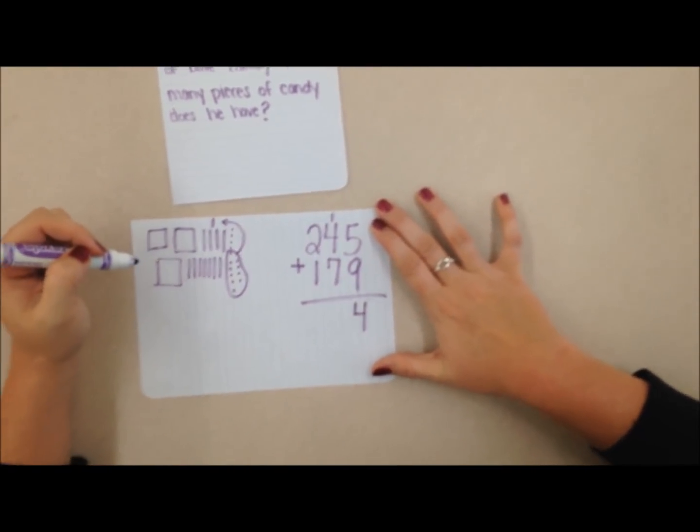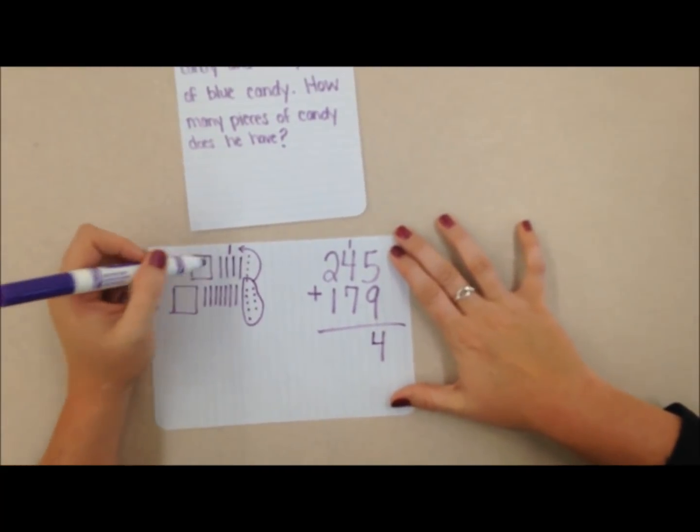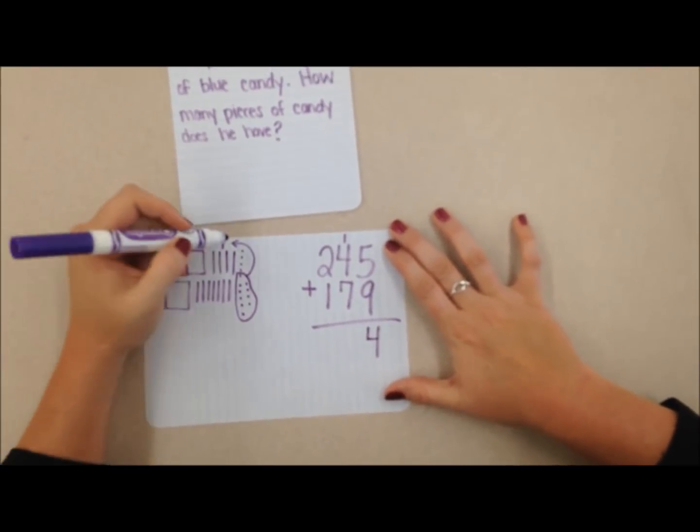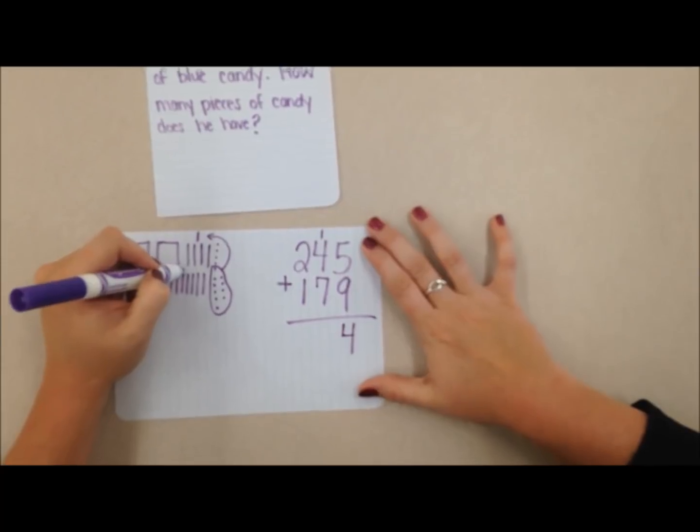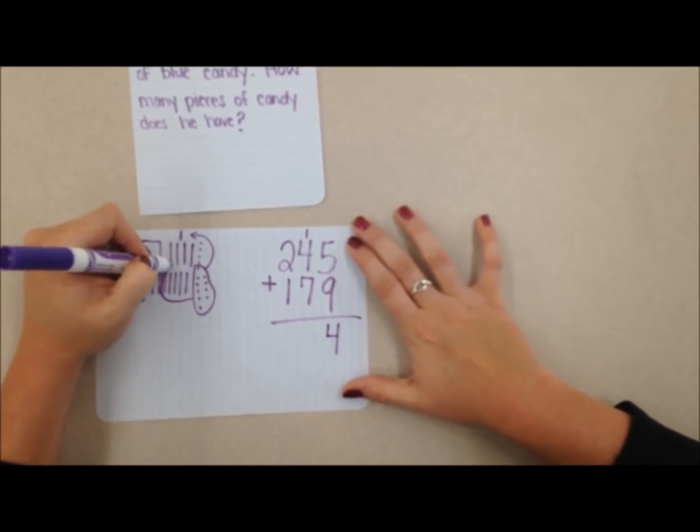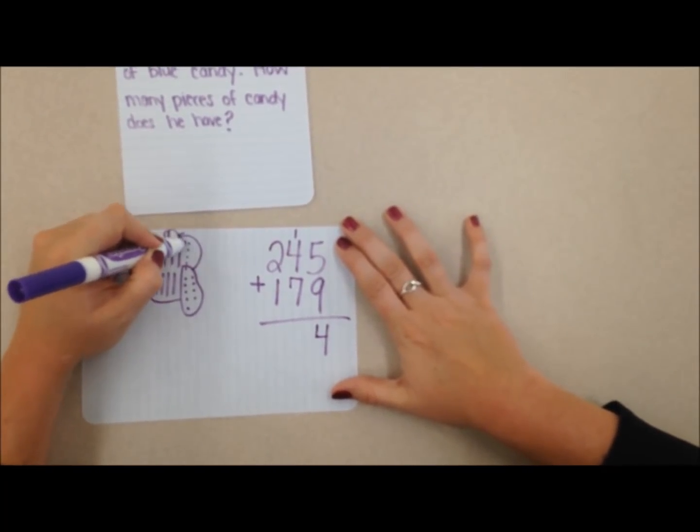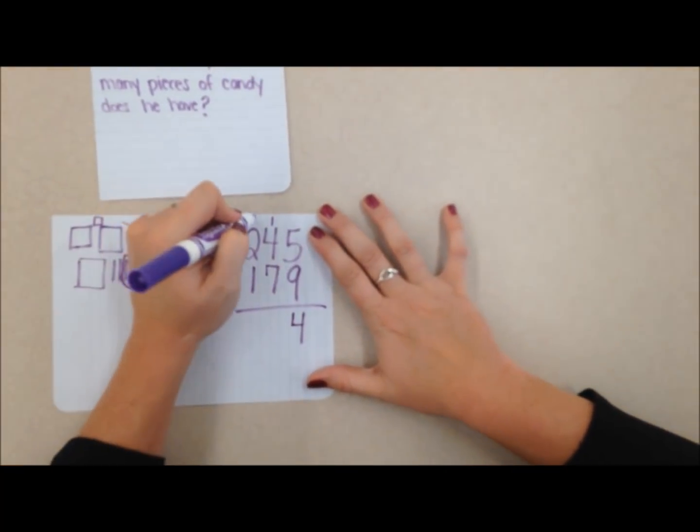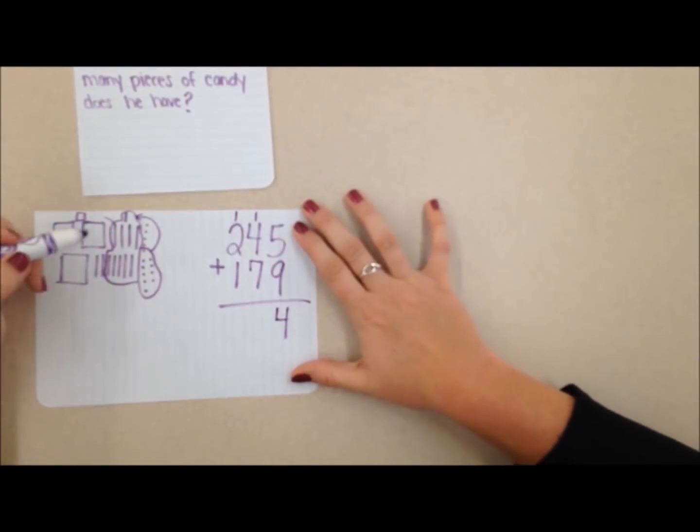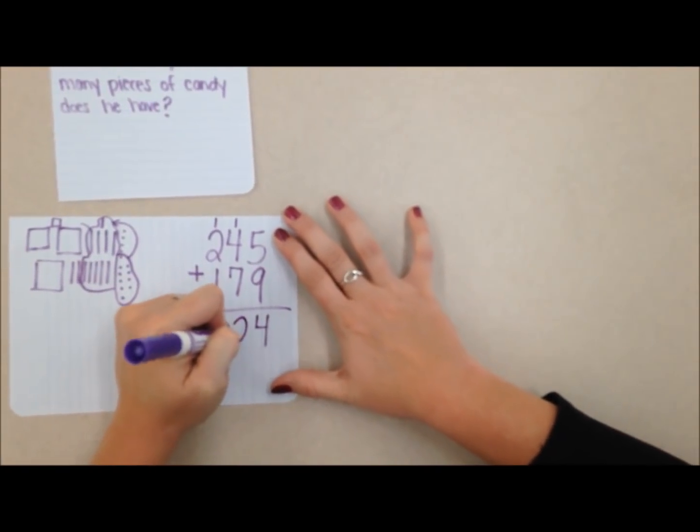Now I have a lot of tens here. So I wonder if I can put 10 tens together to make a new 100. So I have one, two, three, four, five, six, seven, eight, nine, 10. So I can combine or compose a brand new 100 by combining these. Okay. So I added another 100 there. And when I did that, I have two tens remaining.